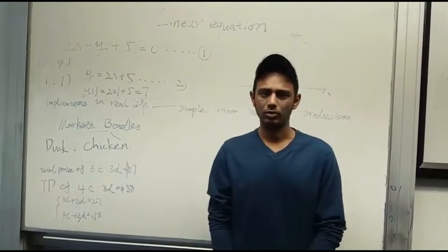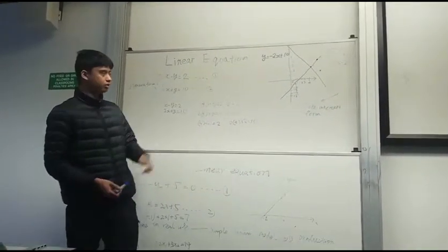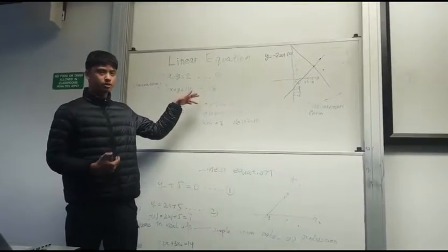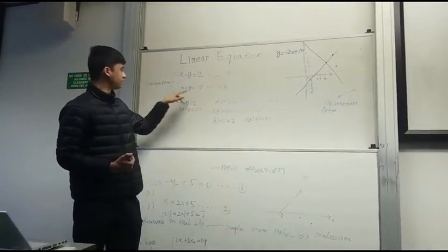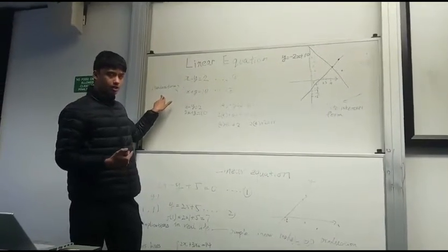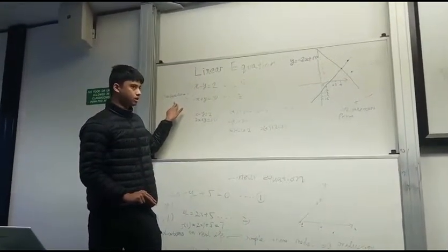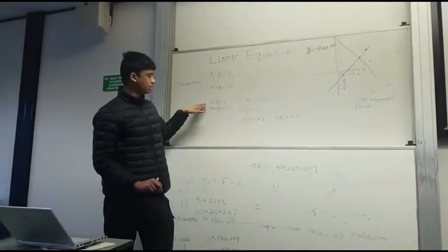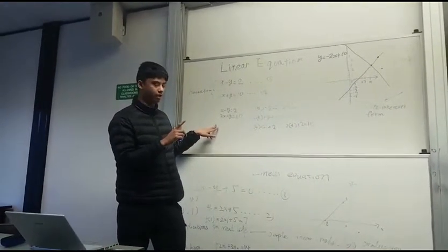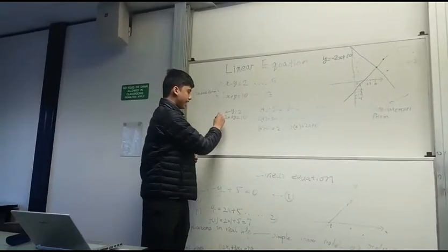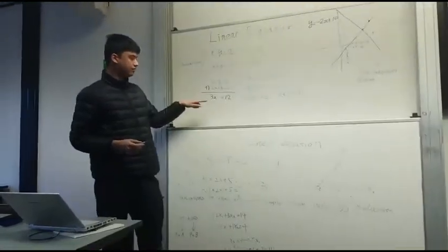I'm going to explain the concept of linear equations and how to solve them. To solve linear equations, you need two equations. In this example, I'll use x minus y equals 2 and 2x plus y equals 10. This is written in standard form. First, you add these equations to find the x variable. Adding them gives 3x equals 12, and simplifying gives x equals 4.